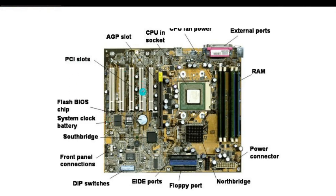These are the PCI slots — the peripheral component interconnect — a local computer bus for connecting hardware to a computer. These are the AGP slots — accelerated graphics port — designed as a high-speed point-to-point channel for connecting a video card to a computer system. It was primarily used to assist in the acceleration of 3D computer graphics. AGP was originally designed as a descendant of the PCI series of connections for video cards, yet it was eventually replaced by PCI slots.